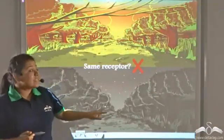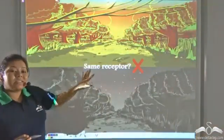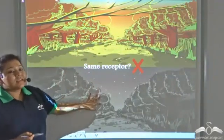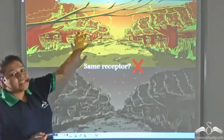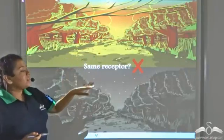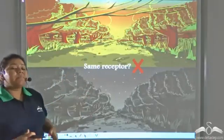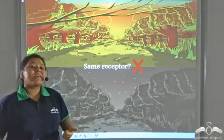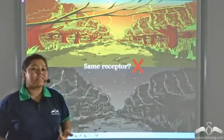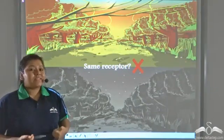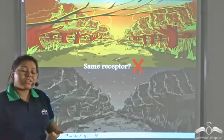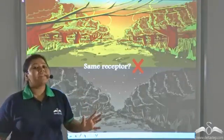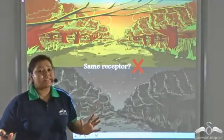Now the same scenery looks different at different times. In the morning it appears bright and colourful, but during the night time it appears black and white. So are the same sensory receptors responsible for this? No — the same receptors are not responsible, so there have to be two different receptors for this.